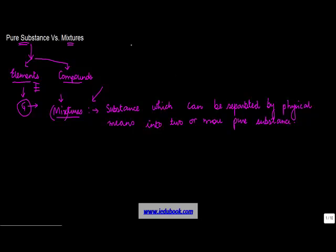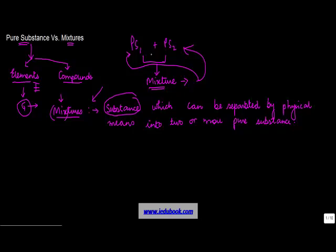Why? Because as I told you, let's say you have pure substance one plus pure substance two. When the two of them combine they will form a mixture. Now a mixture by itself is referred to as a substance which can be broken down back into PS1, which is pure substance one and pure substance two, and that can happen by physical means.